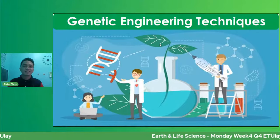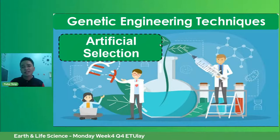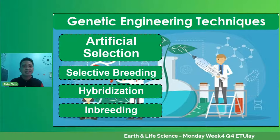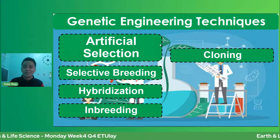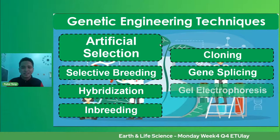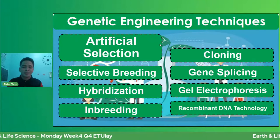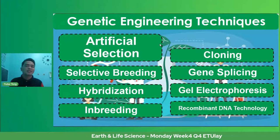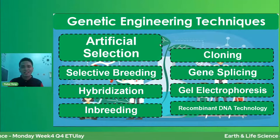Let's enumerate the different genetic engineering techniques we will discuss. Under artificial selection, we have: selective breeding, hybridization, and inbreeding. We also have cloning, gene splicing, gel electrophoresis, and the very famous recombinant DNA technology — being used in different areas and fields in sciences. Those are the techniques; let's discuss them one by one.